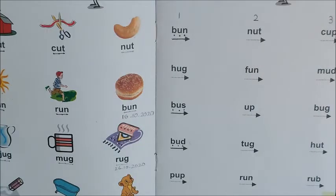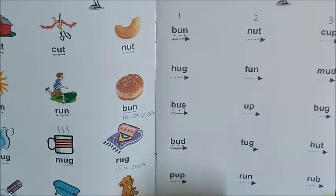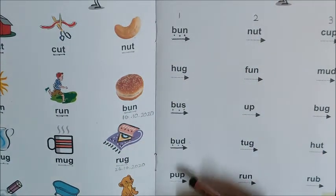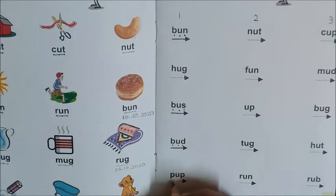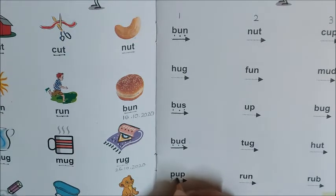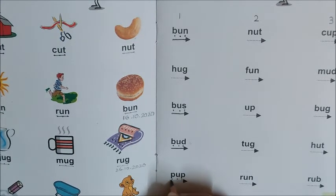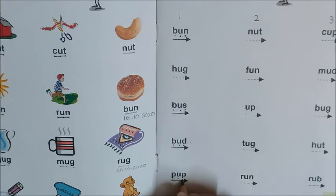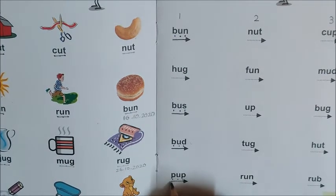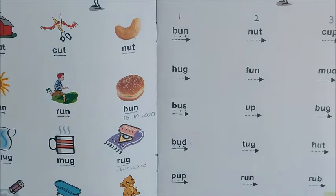Now children, the next word is pup. Where is the word pup? Where is it? Is it the word pup? No. Is it the word pup? Correct — mark the sounds and join and read. Children, which animal's young one is called a pup? A dog's young one is called a pup.